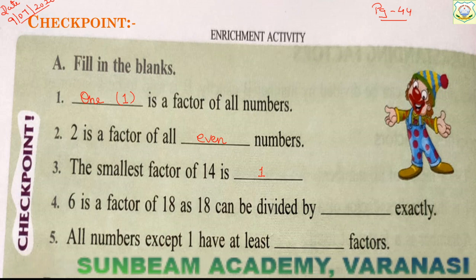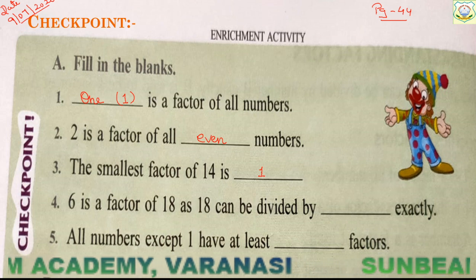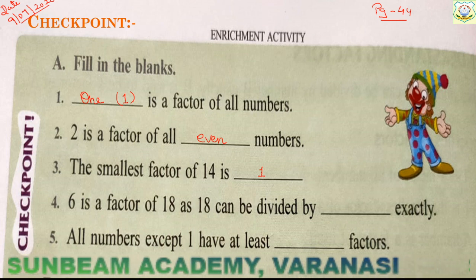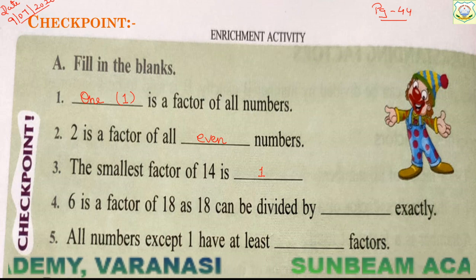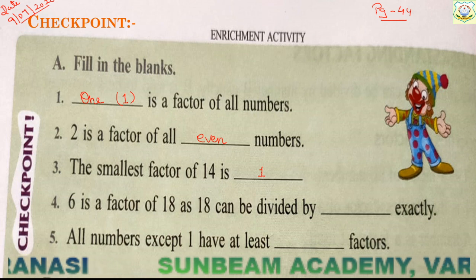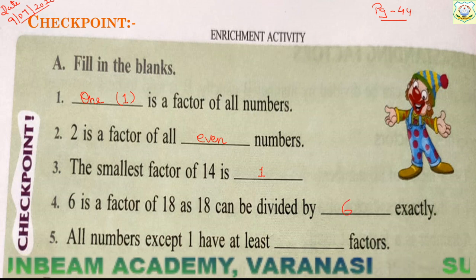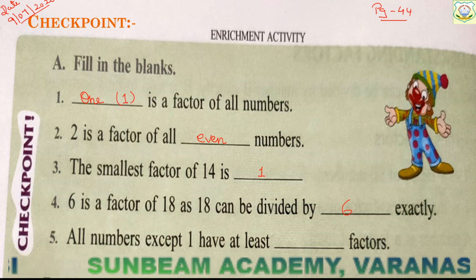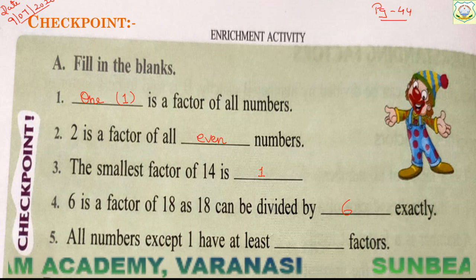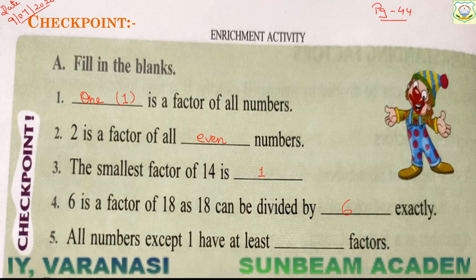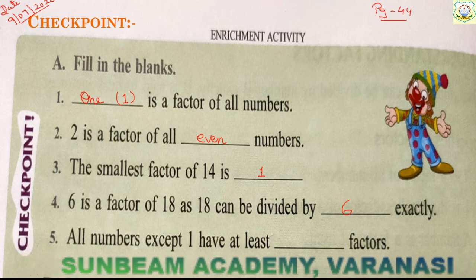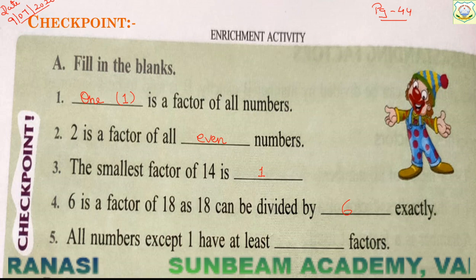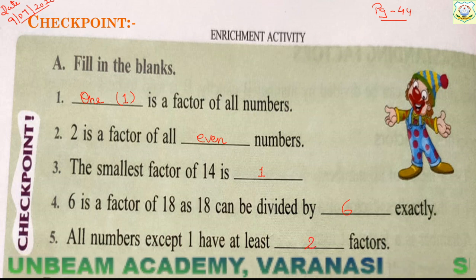The fourth question: 6 is a factor of 18, as 18 can be divided by 6 exactly. So we will write here 6. You have to understand all these things. Next: all numbers except 1 have at least how many factors? 1 is a unique number — it has only 1 factor. But other numbers have at least 2 factors: 1 and the number itself. So write here 2.